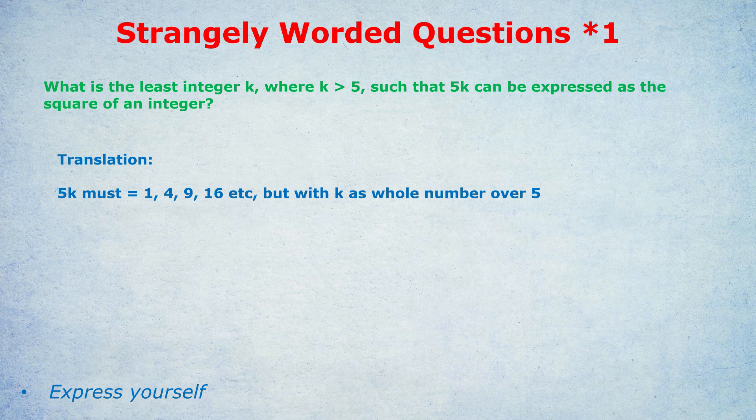Some of you will say, I haven't dealt with the fact that we need the least integer k. Let me just quickly explain all that means. It's just saying there will be multiple square numbers that are multiples of 5. You just have to find the smallest one.